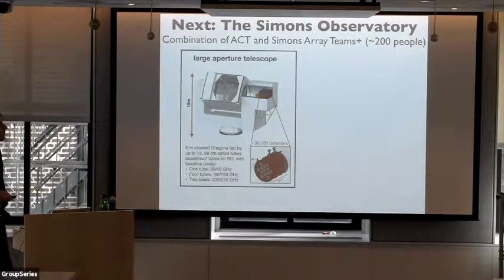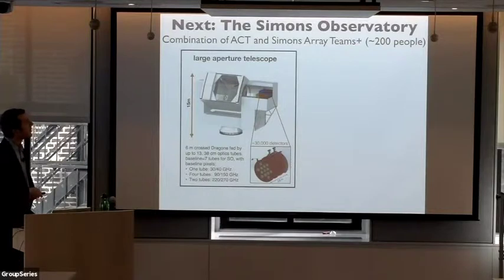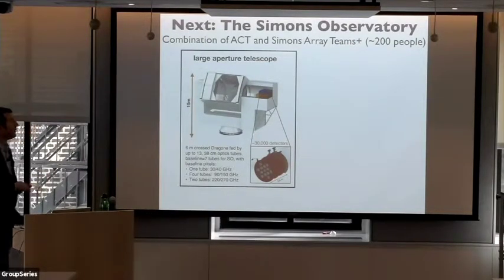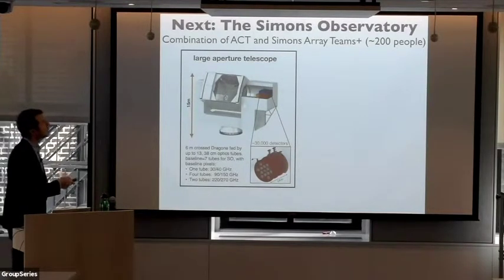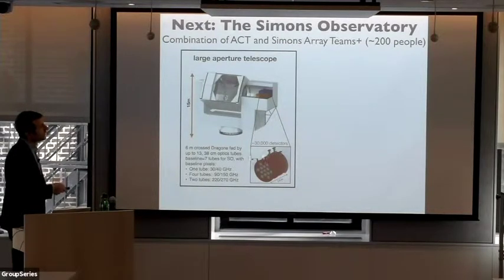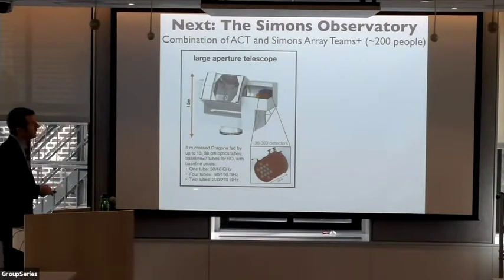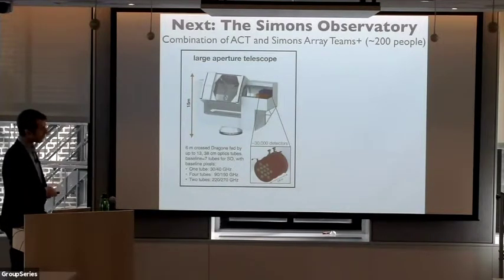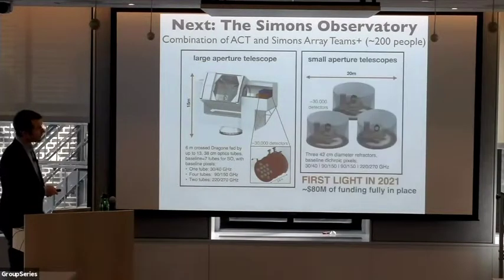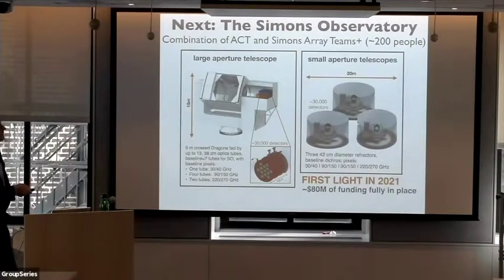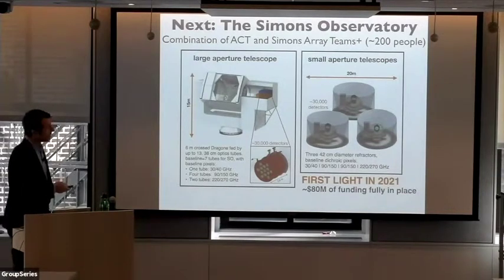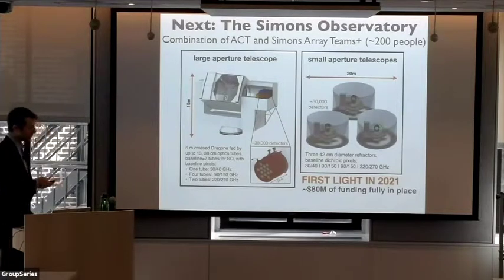The next big project in ground-based CMB after ACT is called the Simons Observatory, a combination of the ACT and Simons Array teams, now grown to about 200 people. SO is a set of telescopes, not just one. First, the Large Aperture Telescope — a six-meter primary dish, the same size as ACT, but with a much larger cryostat holding up to 13 optics tubes each containing several detector arrays. The baseline frequency coverage spans six channels from 30 to 270 GHz; my work was used to determine this frequency distribution by optimizing for various signals in the presence of foreground contamination. There are also small aperture telescopes specifically optimized to go after the primordial B-mode signal.